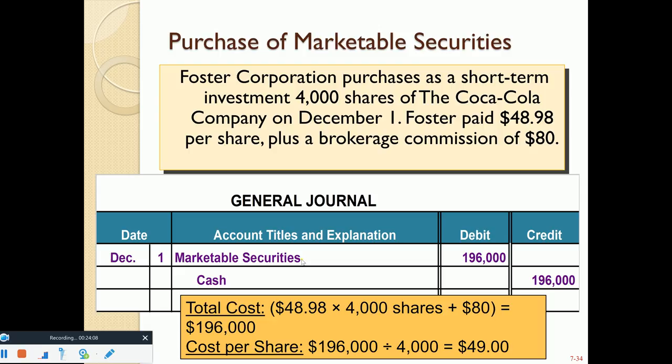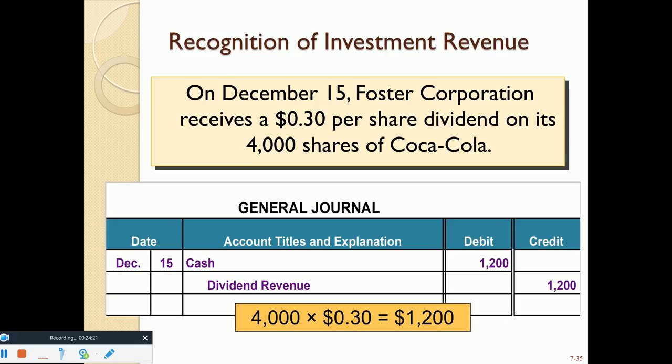Two weeks later, on December 15, Foster Corporation receives a $0.30 per share dividend on its 4,000 shares of Coca-Cola: 4,000 × $0.30 = $1,200. The journal entry debits Cash for $1,200 and credits Dividend Revenue for $1,200.